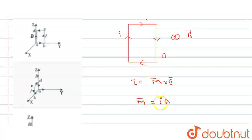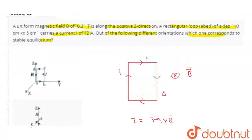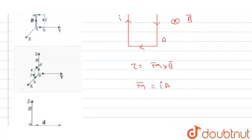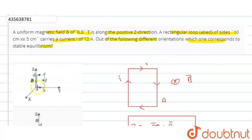Iska direction kidhar hota hai? Current ka direction pe depend karta hai. Aapne right hand ke fingers ko curl karo along current direction, thumb ka direction magnetic moment ka direction dega. Agar stable equilibrium chahiye, toh torque zero hona chahiye.